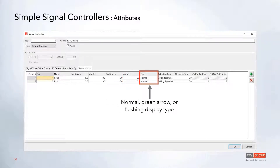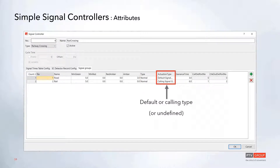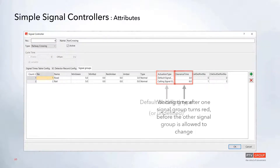We can also change the display type and the actuation type. By default, each controller will have the default signal group and the calling signal group set up. There is also a clearance time, which is the waiting time that occurs after one of the signal groups turns red before the other one is allowed to change.